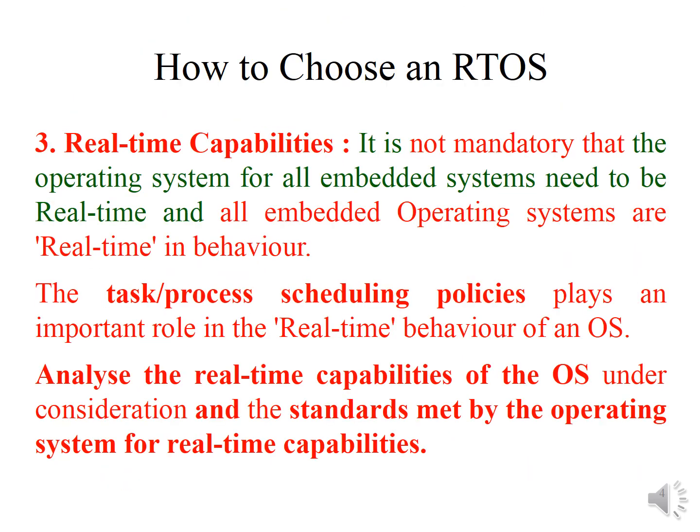The third functional requirement is real-time capabilities. Not all embedded operating systems are real-time in behavior. Real-time behavior depends on the task or process scheduling policies, so choose an OS with an excellent scheduling policy. If you want to manufacture an embedded system with real-time capabilities, choose an OS with suitable real-time capabilities that meets the standards.